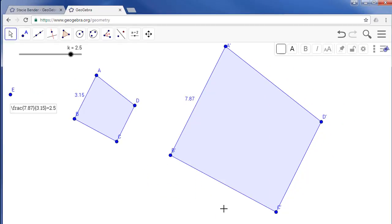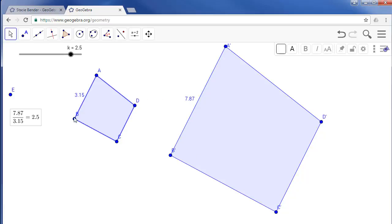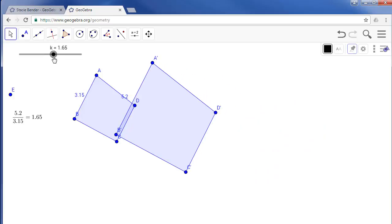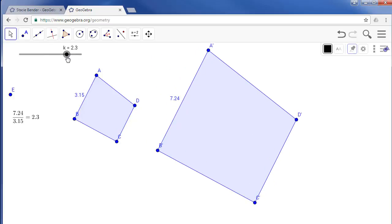And now we can see, we need a space there. Now we can see that the scale factor is actually equal to the ratio of the dilated images side over its original pre-image.